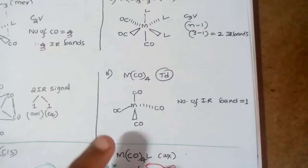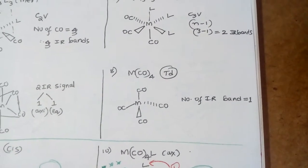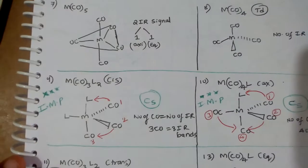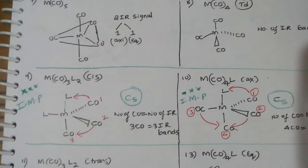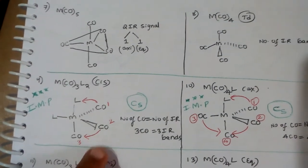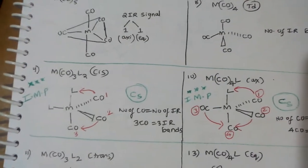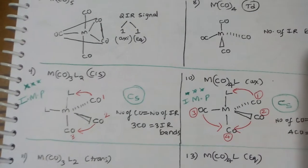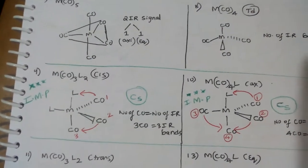For MCO4 — it's perfectly tetrahedral — number of IR bands equals one, because all CO are in the same environment. For MCO3L3, its point group is Cs. Number of CO equals number of IR bands. Three CO bonds are there, giving three IR bands.